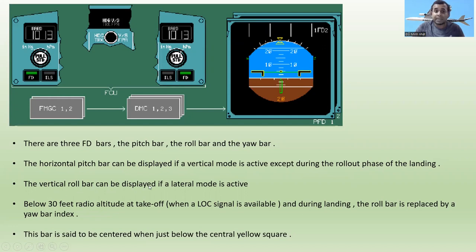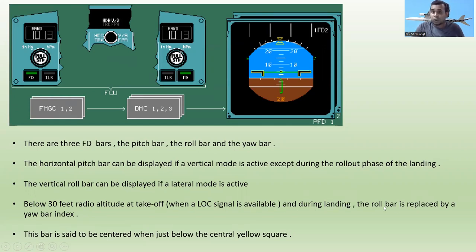The vertical roll bar can be displayed if a lateral mode is active. Below 30 feet radio altitude at takeoff — when a localizer signal is available — and during landing, the roll bar is replaced by a yaw bar index. This bar is said to be centered when it appears just below the central yellow square, which you can see on the display.